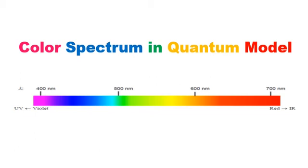Hello everyone. In this video I'm going to talk about different colors in chemistry and how to interpret them by quantum model. As you see in this slide, we have a variety of colors in visible light. Aside from red color, we have orange, yellow, green, blue, indigo, and violet. We are going to learn how we can find the variety of colors in chemistry.